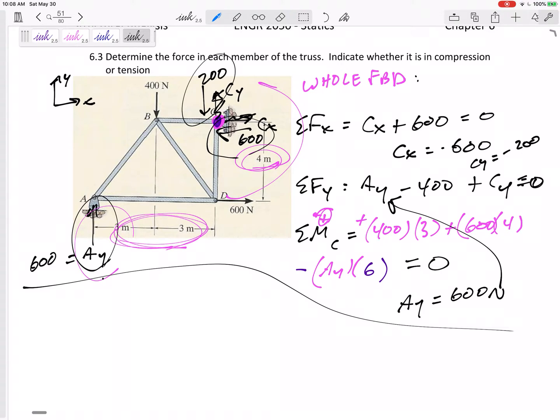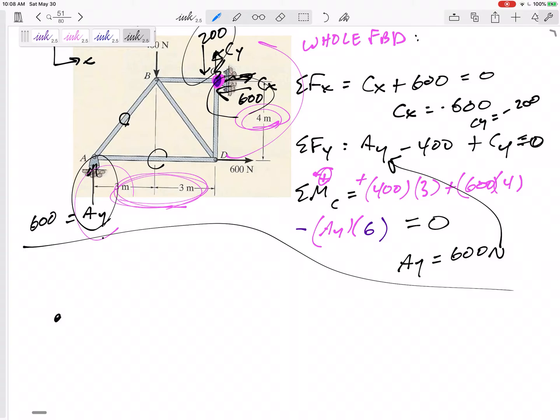So let's do method of joints. I think I could start at C or A. I think I could start at joint C or joint A because either of those joints only has two unknown members attached to them. I'm going to start at A. So here is joint A. I have already solved for this rocker of 600 right there.